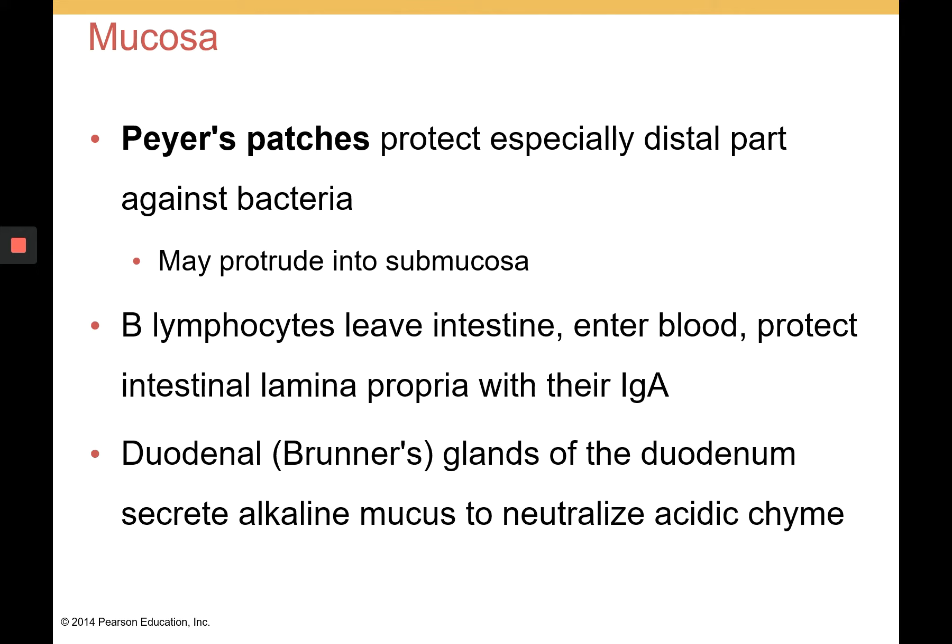We want to remind everyone about Peyer's patches. The mucosa of the GI tract — specifically the small intestine — contains Peyer's patches. These contain germinal centers with B cells that can make immunoglobulins, including IgA, which is the mucosal dimer antibody. They may protrude into the submucosa. The B lymphocytes can leave the intestine, enter the blood, and protect the rest of the intestinal wall and lamina propria with their IgA.